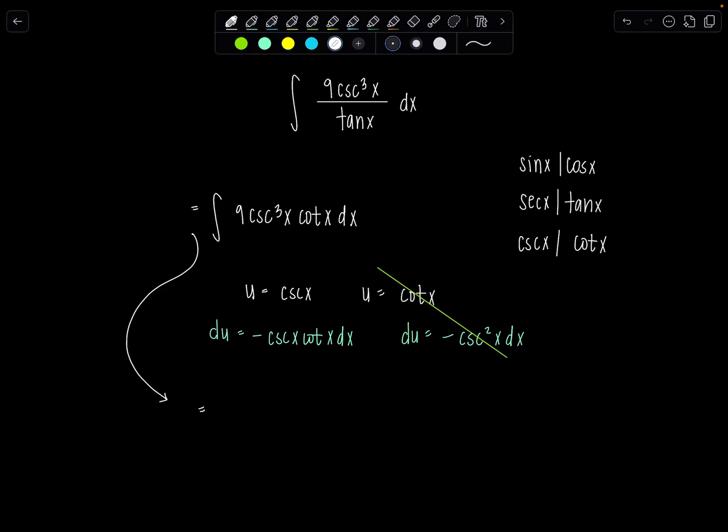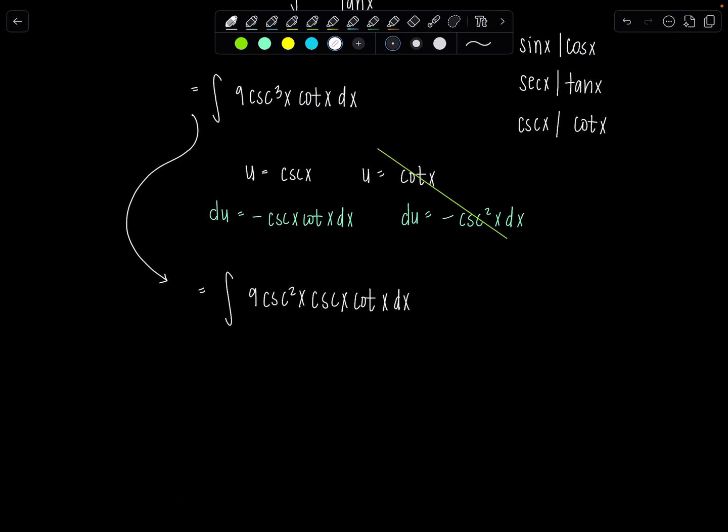Let me rewrite things first so you can see though. This is 9 cosecant squared x times cosecant x cotangent x dx. Do you see now? Okay. And then technically, let's be precise. Let's be technical. Negative du is cosecant x cotangent x dx.